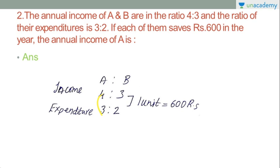Now we take the difference. The ratio is equal on two sides: income ratio is 4 is to 3, expenditure ratio is 3 is to 2. There is a gap, and one unit equals Rs.600.